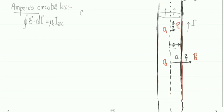Since the wire has a non-negligible cross-section, we need the concept of current density. Current density J is defined as current flowing per unit area, that is J = I/A. Here the steady current I flows through the wire of radius a, so J = I divided by πa², where πa² is the cross-sectional area of the wire.